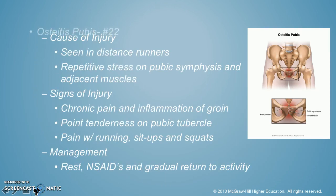We have this thing called osteitis pubis — this is number 22. We see it in distance runners because of the repeated stress on the pubic symphysis. The pubic symphysis is where during childbirth the canal widens, and repeated stress from running can lead to this issue. It's chronic pain and inflammation. You'll have point tenderness on your pubic tubercle and pain with running, sit-ups, and squats. Management: you just have to rest and take NSAIDs, then slowly work your way back in.